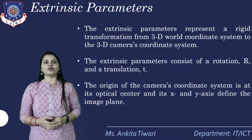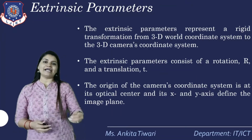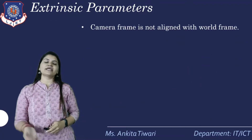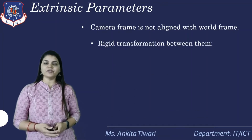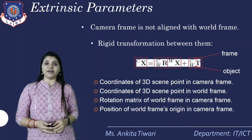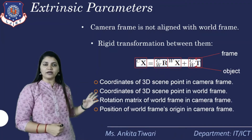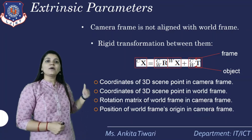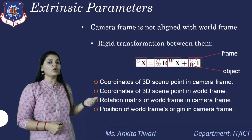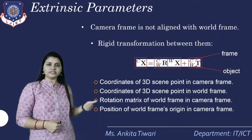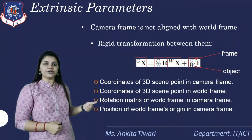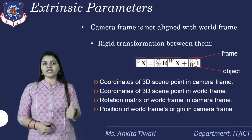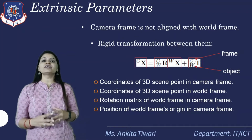The origin of the camera's coordinate system is at the optical center, with the X and Y axes defined in the image plane. The camera frame is not aligned with the world frame, so the rigid transformation between them is defined as: Cx = R (rotation matrix from world to camera coordinates) times X plus T (translation). Rotation and translation are combined to form this rigid transformation.